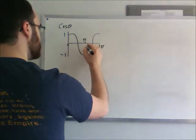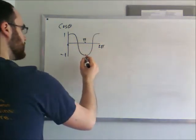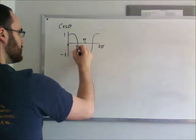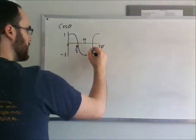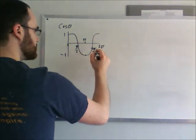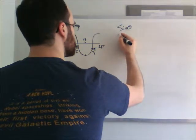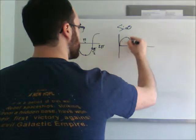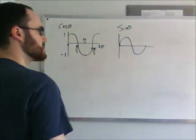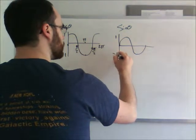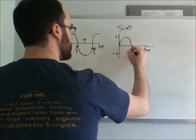So here we have at π, we have this value, negative 1. At π/2, we have 0, and at 3π/2, we have 0. So let me just draw this sine graph again for more reference. So we have 1, negative 1, 2π, and this is π.